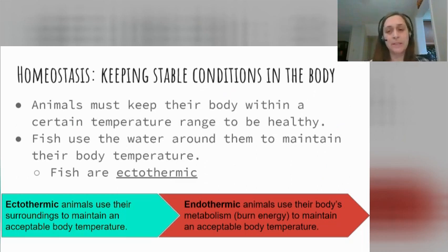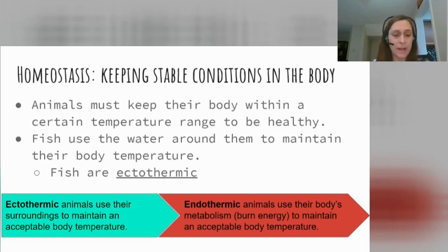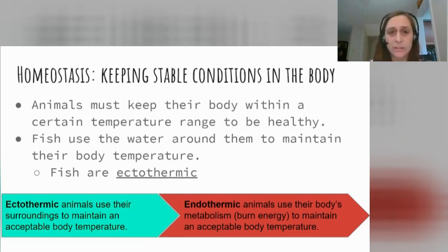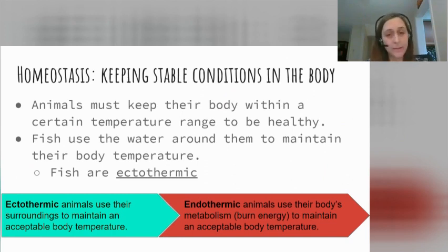Homeostasis is another very important goal — keeping stable conditions in the body. Animals have to keep their bodies within a certain temperature range to be healthy, as well as a certain pH, not too acidic, not too basic, as well as many other conditions that are all part of homeostasis. There are different strategies animals can use for that. Ectothermic animals use their surroundings to maintain an acceptable body temperature, staying in locations where the water, air, sunlight, or rocks help keep their body temperature where it needs to be. Endothermic animals like us use our body's metabolism — burning energy to maintain an acceptable body temperature, even in environments that aren't 98 degrees around us.